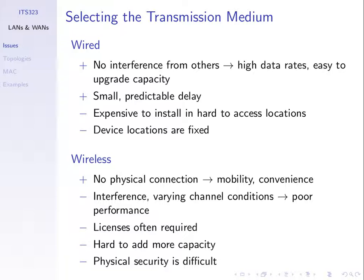Similarly, if I connect two computers with a wired LAN, I can send at one gigabit per second. If I want two gigabits per second, I add a second LAN port and plug in a second cable. For links between different cities or countries, upgrading capacity is as simple as adding new cables.